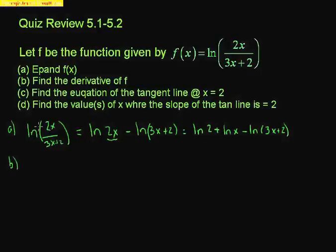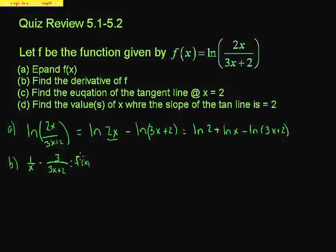For part b, I need to find the derivative. The derivative of ln(2) is zero since it's a constant. The derivative of ln(x) is just 1/x. Then the derivative of ln(3x + 2): the inside goes on the bottom — (3x + 2) — and the derivative of that is 3. So the derivative is 1/x minus 3/(3x + 2).